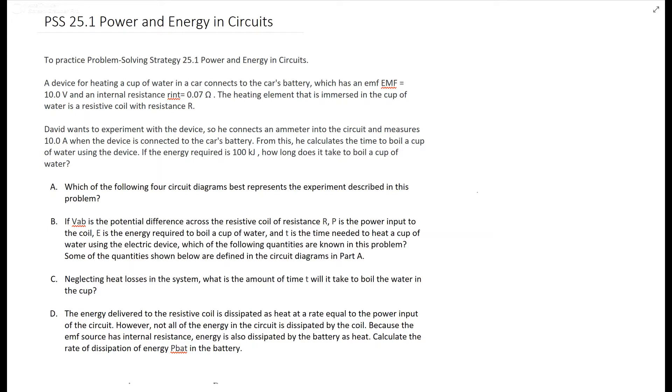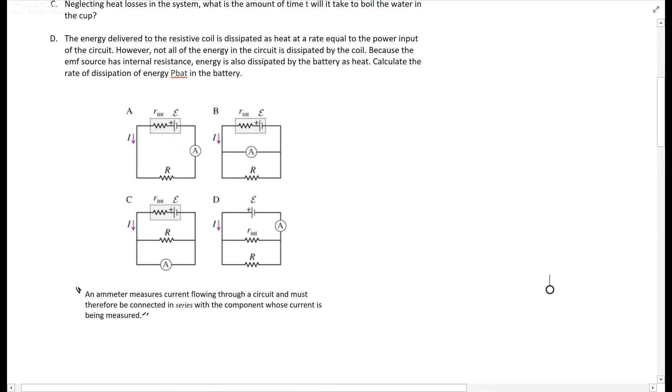The first question asks which of the diagrams best represents this situation. The answer is A, and this is the description it gives once you get the answer right. Ammeters measure current flowing through a circuit and must be connected in series, and this is the only one connected in series because these are all in parallel.